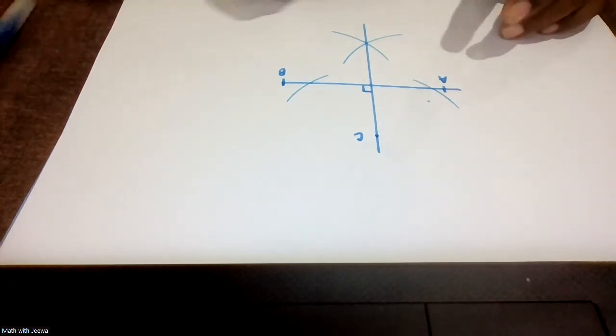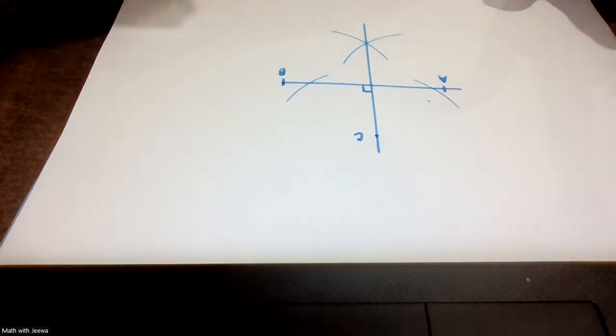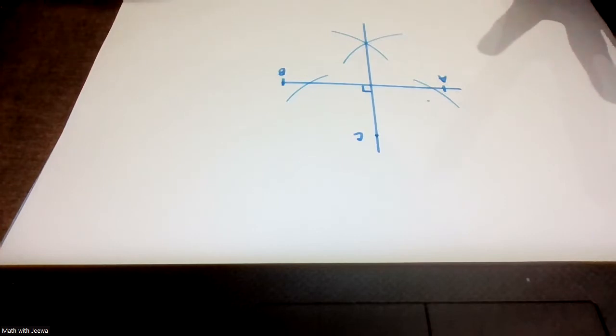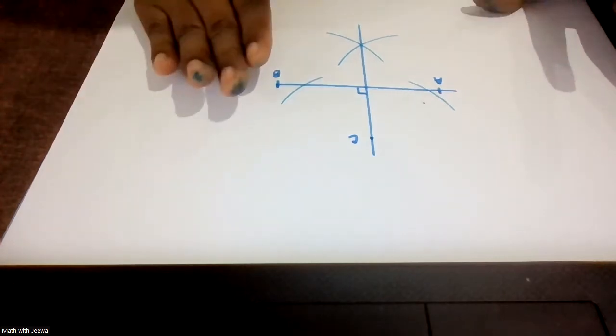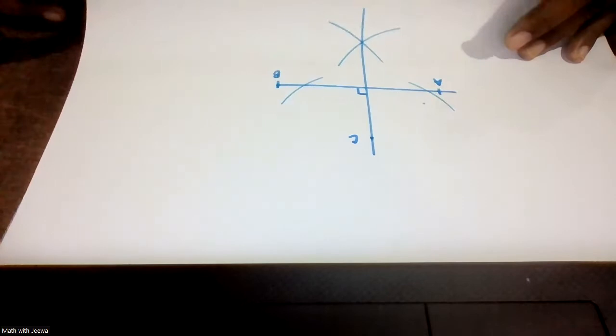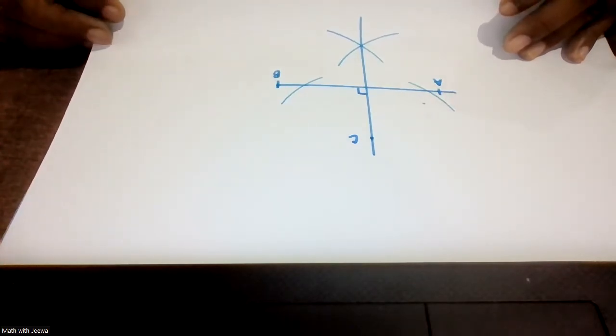With the next video I will explain all the past paper questions related to construction. Till then, go through the video, pause it, and do it by yourself. In the next video I also want to explain how to construct triangles and complete them. Here, let's say you have triangle ABC. They will give you angle A is 60 degrees, angle C is 30 degrees, and AC line is 5 centimeters.